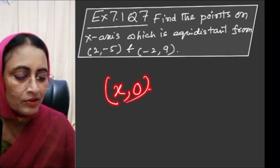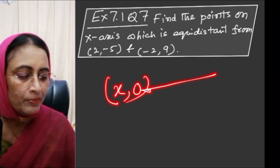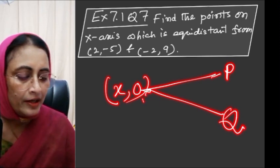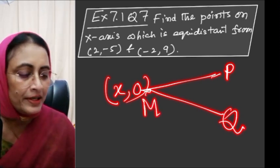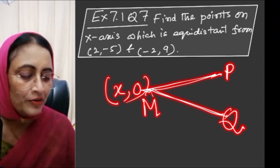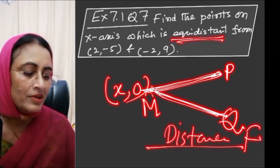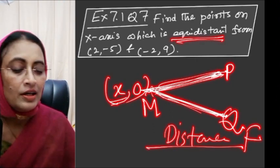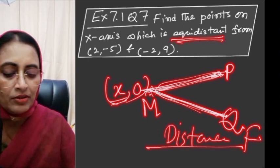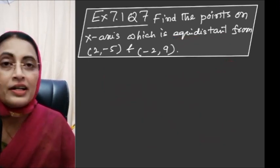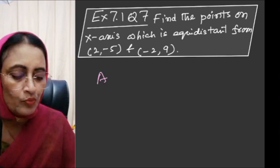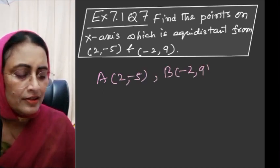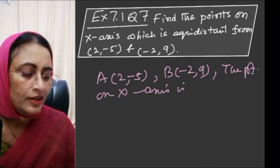Therefore the coordinate of the unknown point is (x, 0). We need to find this point which is equidistant from the two given points. Let us call this point M. Then PM = MQ — that is, the distances are equal. Let A = (2,-5) and B = (-2,9). Suppose M = (x, 0).